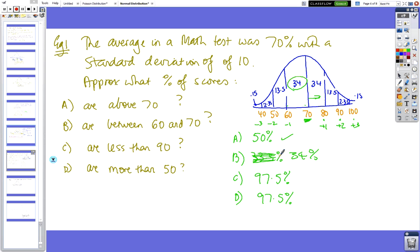Less than 90, so going backwards, the only scores you don't count are those two, which adds up to 2.5, so it's 97.5. And more than 50 is going forward, so you're not counting those two numbers, so it's again 97.5.